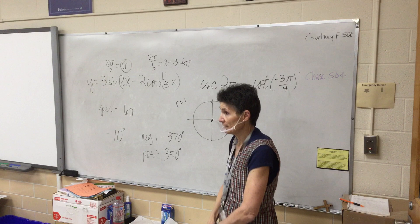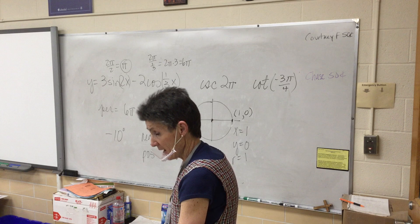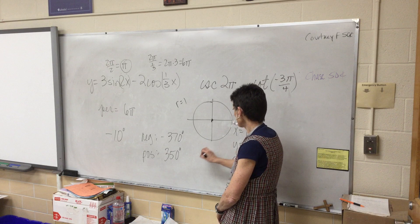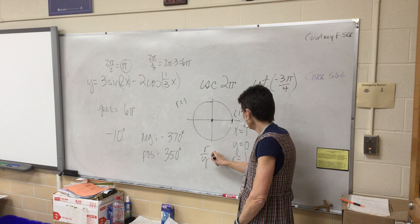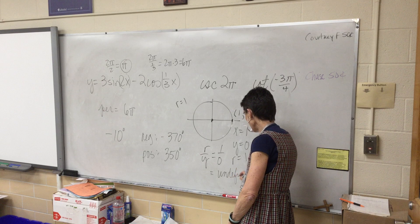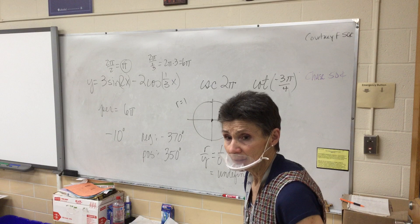Cosecant is the reciprocal of sine. Sine is y/r, so cosecant is r/y. Here that's 1/0, which is undefined. Anytime you have a zero in the denominator, you're going to be undefined.